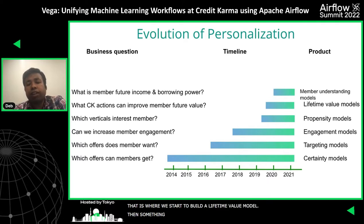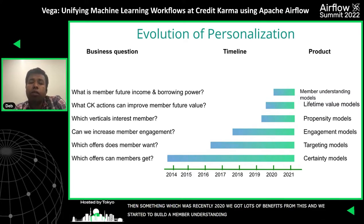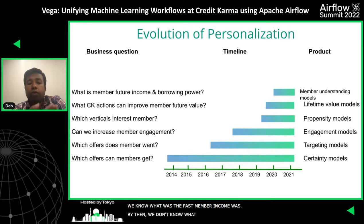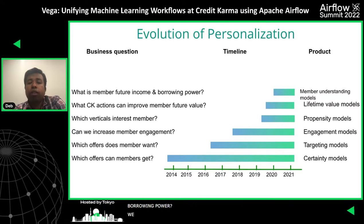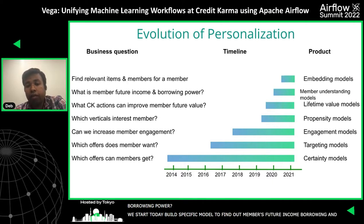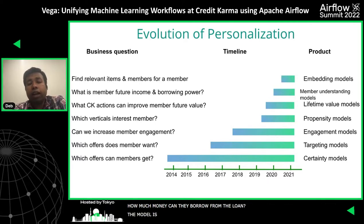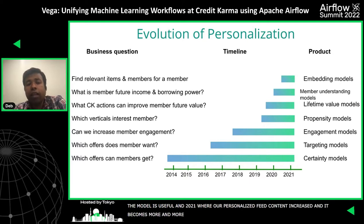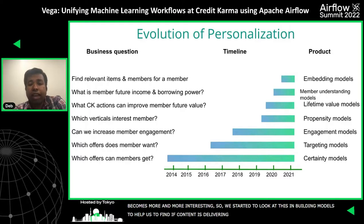Then, something which we recently got a lot of benefits from in 2020, we started building member understanding models. We know what the past member income was, but we don't know the future income or future borrowing power. So we started building specific models to find out the member's future income and how much money they can borrow from a loan. These models have been very useful. Then in 2021, as our personalized feed content increased and became more interesting, we started looking into embedding models that can help us find if content is relevant for our members and recommend such content.